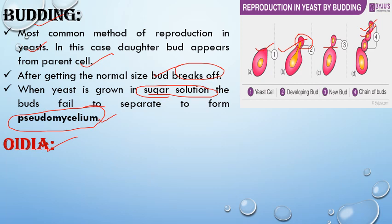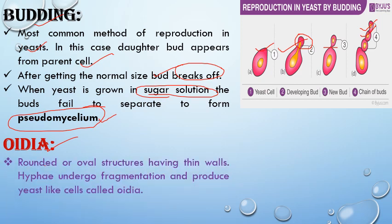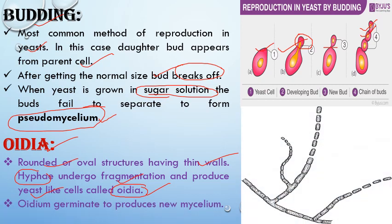The next method is the formation of oidia. Oidia are small mycelial fragments, slightly circular in shape, that have the capacity to give rise to fungal filaments or hyphae and finally form a full-fledged fungal thallus. These are rounded or oval structures having thin walls. Small hyphae undergo fragmentation and produce yeast-like small cells known as oidia. Each oidium germinates to produce new mycelium and gives rise to the new thallus of the fungi.